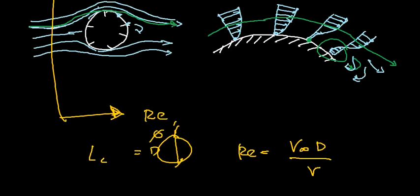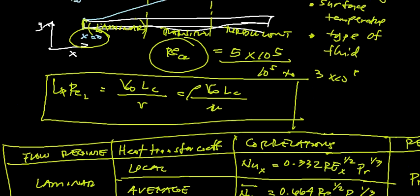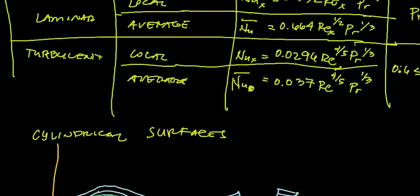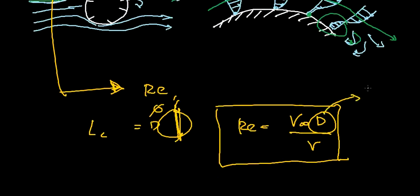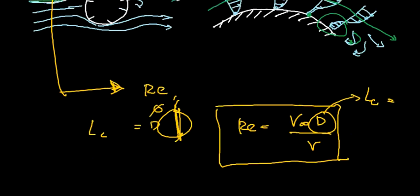Last time, in a flat surface, the characteristic length was this formula. Instead of having this Lc, the characteristic length when we have a cylindrical surface is actually equal to D or the diameter of the cylinder. That's why in our equation we can see that the characteristic length is equal to D.